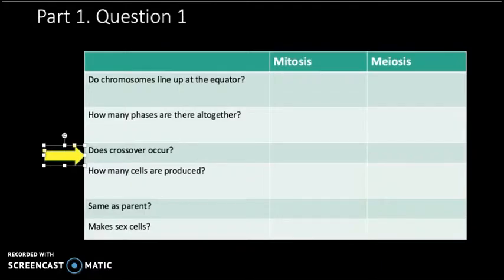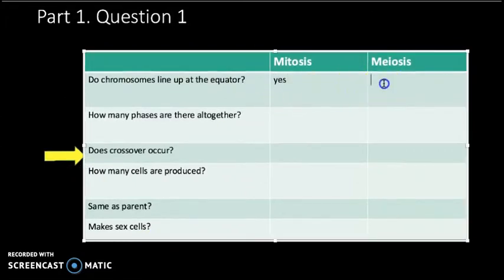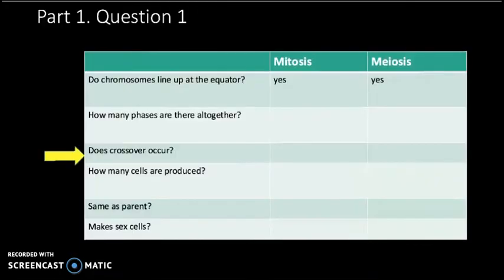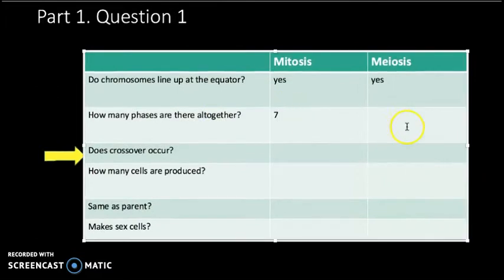Did the chromosomes line up at the equator? Yes — for both, they lined up at the equator and got pulled apart. How many phases were there altogether? Mitosis has seven phases — that's just for making regular body cells, it's simpler. Meiosis has twelve phases to make sex cells. Does crossover occur? No in mitosis — you get exactly the same chromosomes when you copy cells on an everyday basis. But in meiosis, you do crossover, mixing the chromosome from dad and the one from mom to get new chromosomes.